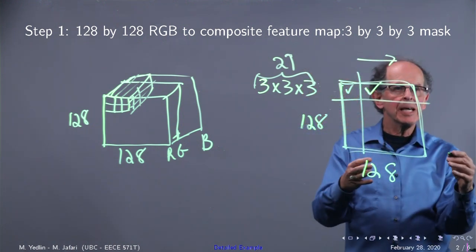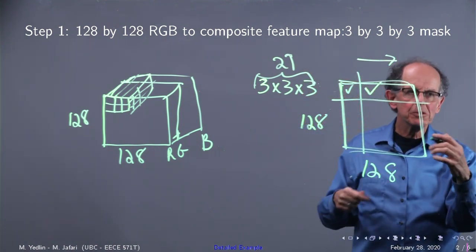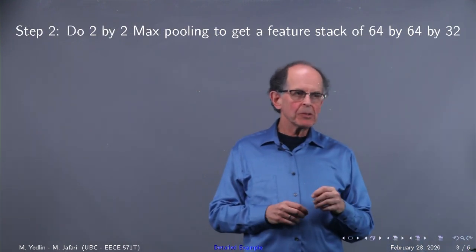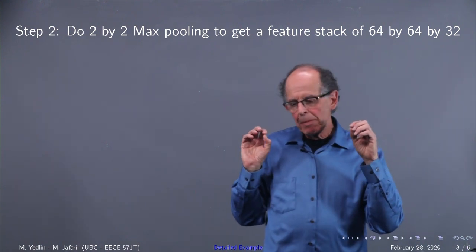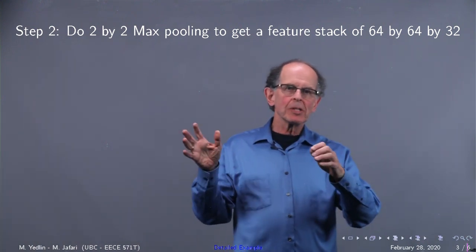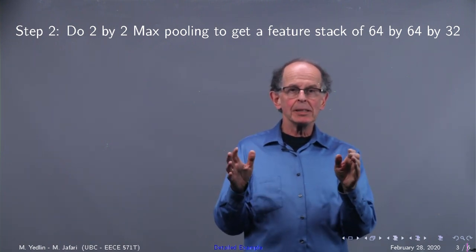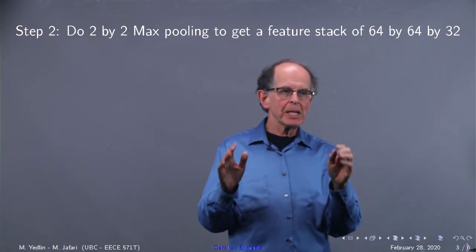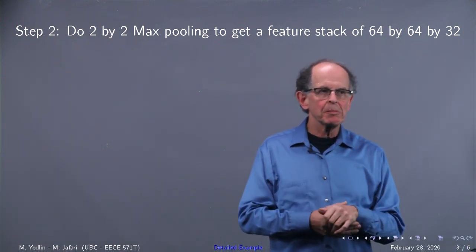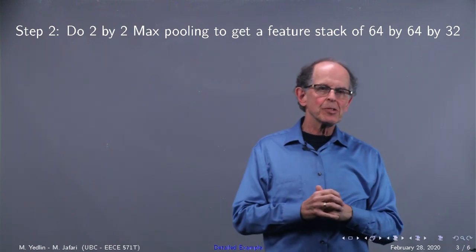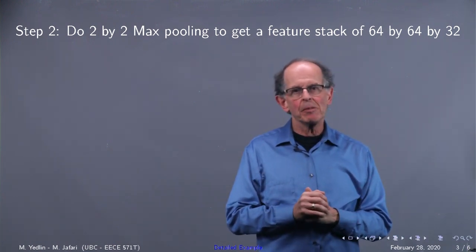That's not enough. We're going to repeat for 32 feature maps. Now what do we do? We do a max pooling to reduce that image from 128 by 128 by 1 to 64 by 64 by 1, but then we do it 32 times. So we get a feature stack, and I'm not going to attempt to draw it, just a stack of features that are 64 by 64 by 32.